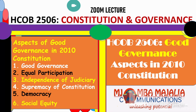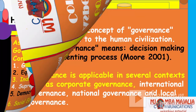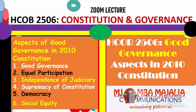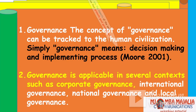In lecture 2b, we look at the aspects of good governance in the 2010 Constitution — the one promulgated in 2010. Some of the aspects of good governance include equal participation, independence of judiciary, supremacy of the Constitution, democracy, and social equity. Those are some of the good aspects in the 2010 Constitution that we are going to look at.